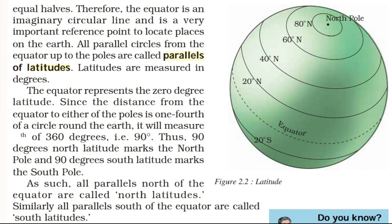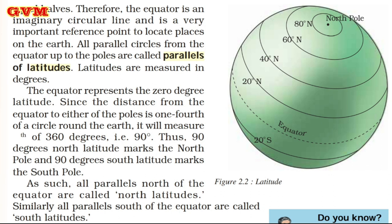Since the distance from the equator to either of the poles is one-fourth of a circle around the Earth, it measures 90 degrees. The North Pole is at 90 degrees North latitude and the South Pole is at 90 degrees South latitude. All parallels north of the equator are called north latitudes, and all parallels south of the equator are called south latitudes.